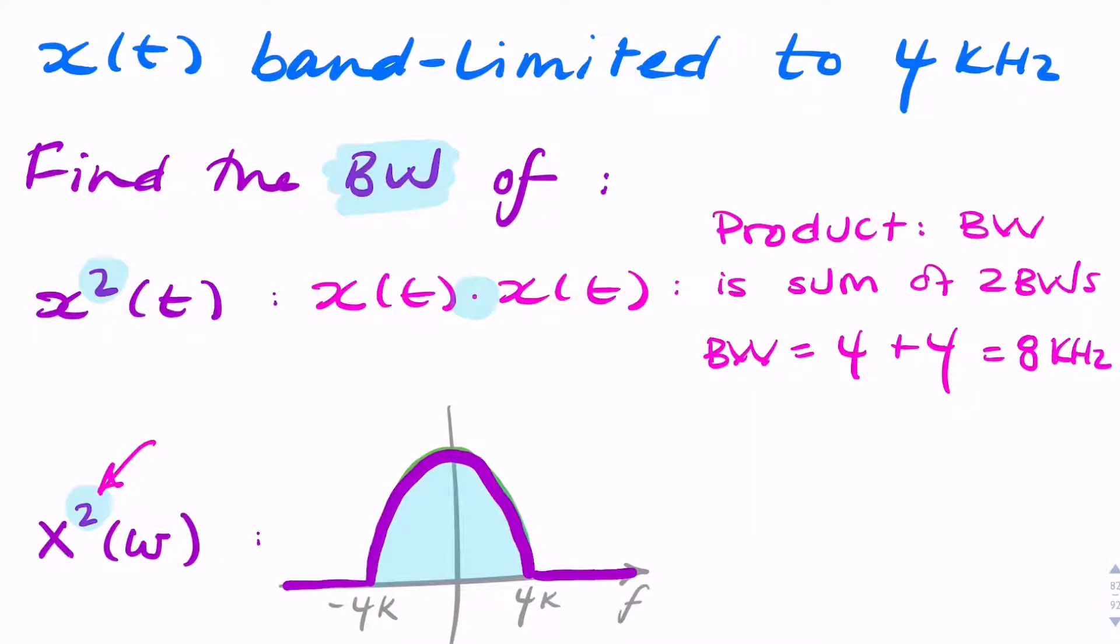So the shape would change, but the bandwidth wouldn't change. It would still be limited between minus 4 and 4, because all frequencies greater than 4 and less than minus 4 would be multiplied by 0.